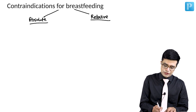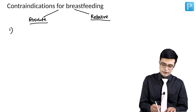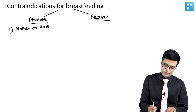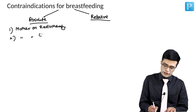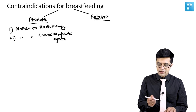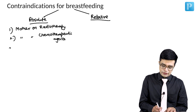Absolute contraindications — first, those related to the mother. If the mother is on radiotherapy, second, if the mother is on chemotherapeutic agents — anti-cancer agents — you cannot allow breastfeeding.